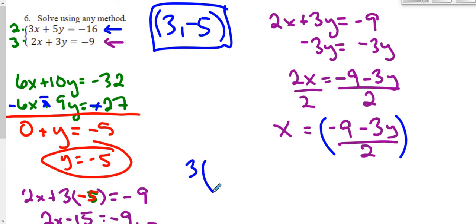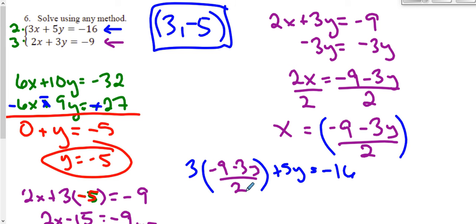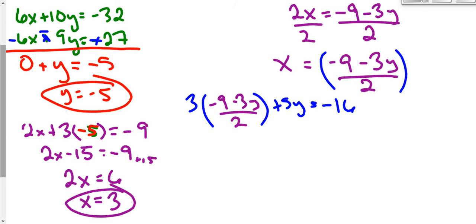So the top equation becomes 3 times (negative 9 minus 3y over 2) plus 5y equals negative 16. I have to multiply this x value by 3, and then divide by 2. Let's multiply by 3 first, distributing to both terms: we get negative 27 minus 9y, still divided by 2. We haven't divided by 2 yet, so we'll leave that there, and bring down the rest: plus 5y equals negative 16.